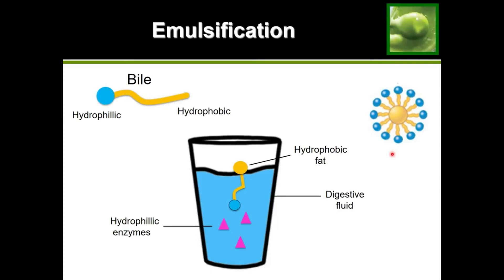Because the fat now has a hydrophilic outer layer, it can actually mix with the hydrophilic fluid — it's no longer afraid to enter a hydrophilic area. This structure, where fat has been completely surrounded by bile and has a hydrophilic outer layer, is what we call emulsified fat. Now that it can enter the fluid, it can make contact with the enzymes and begin digestion.